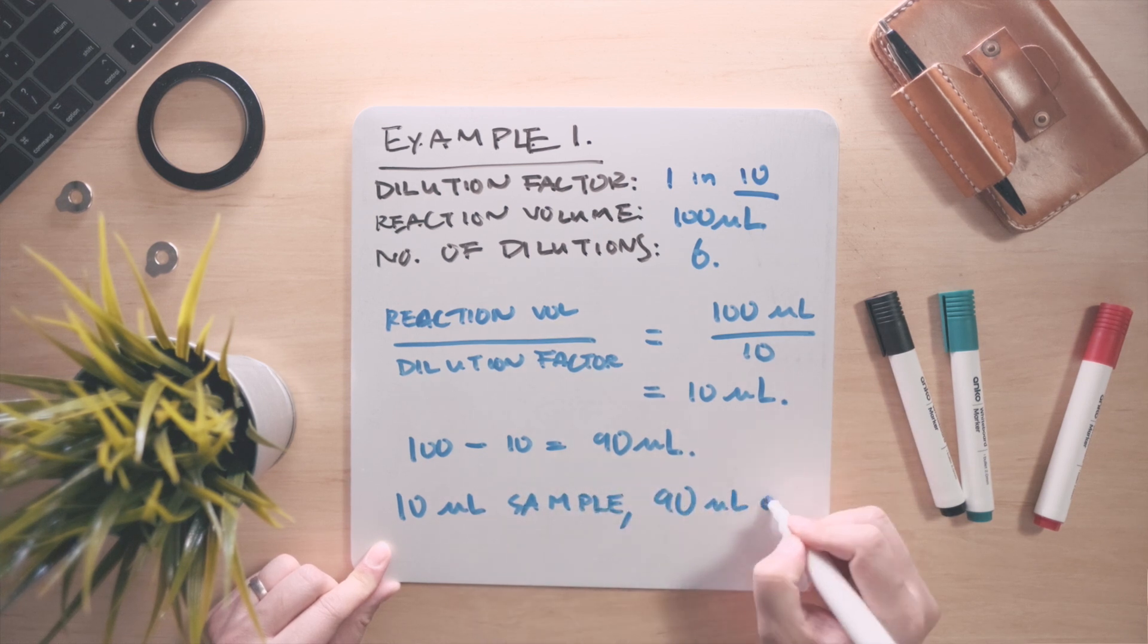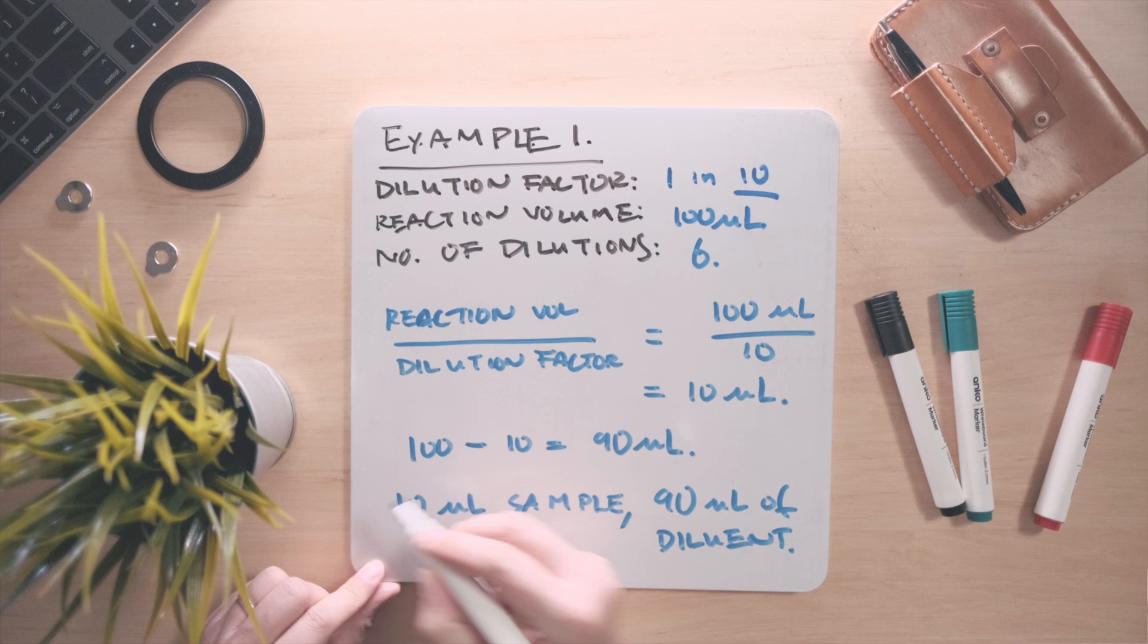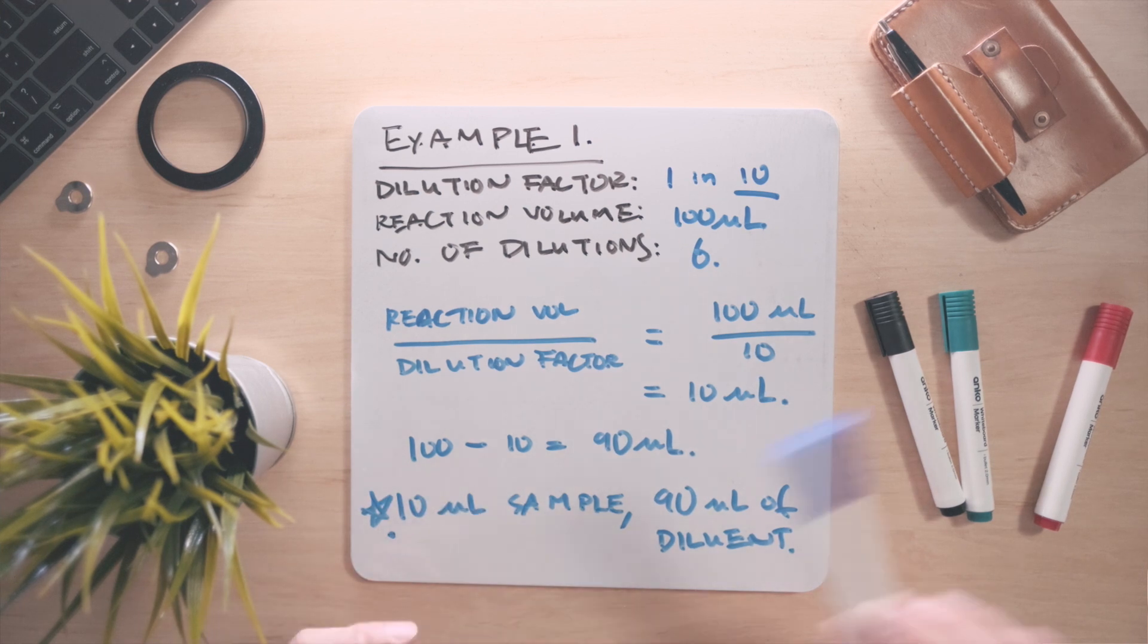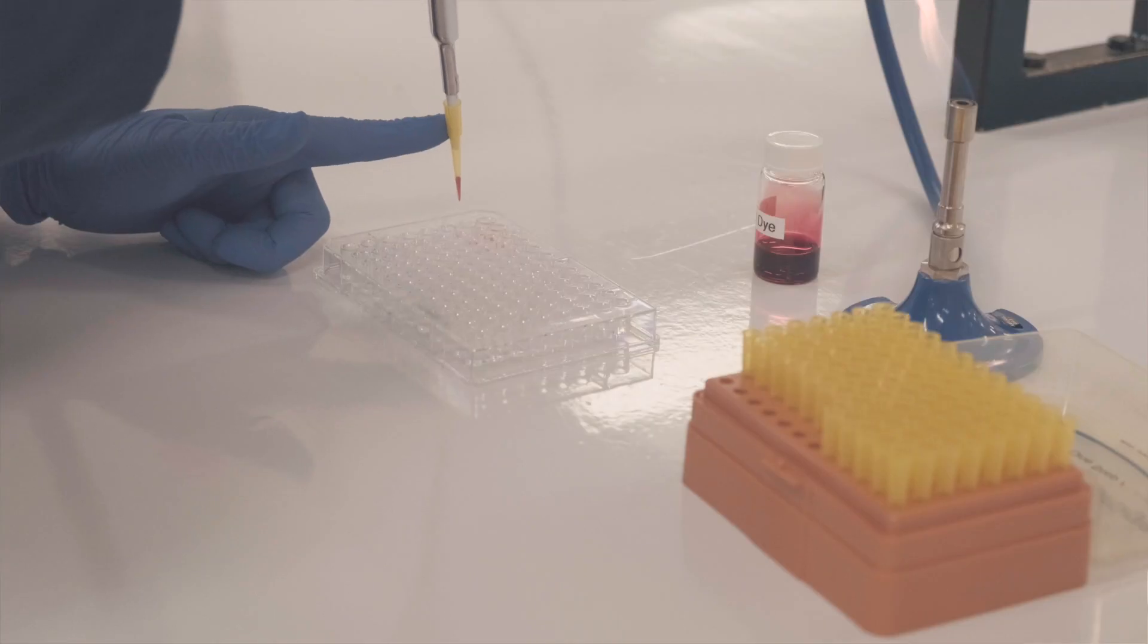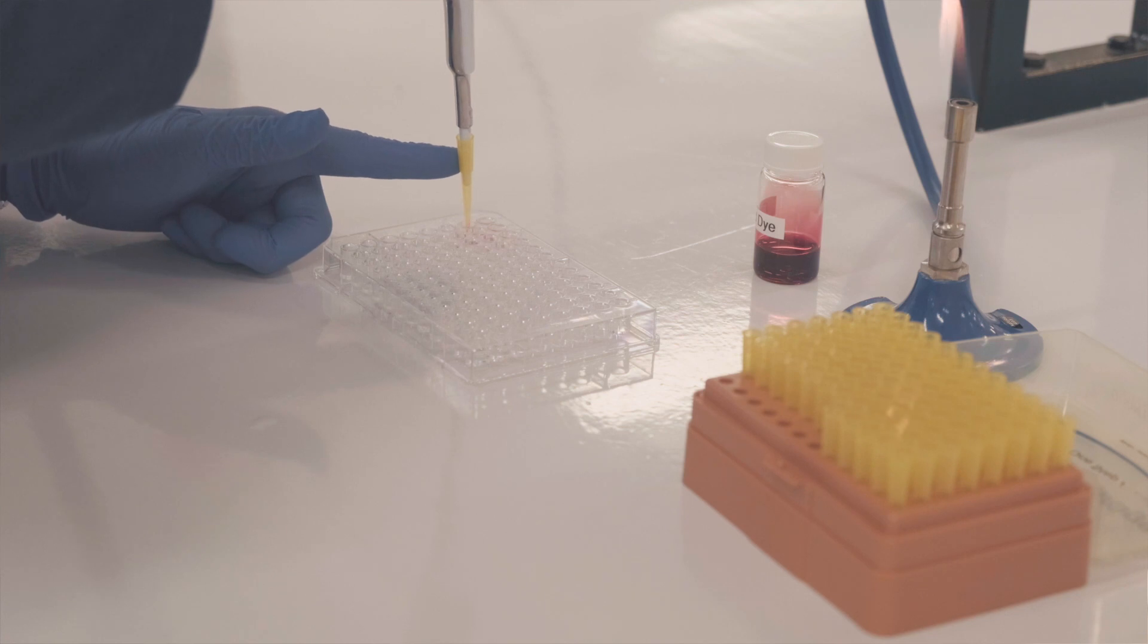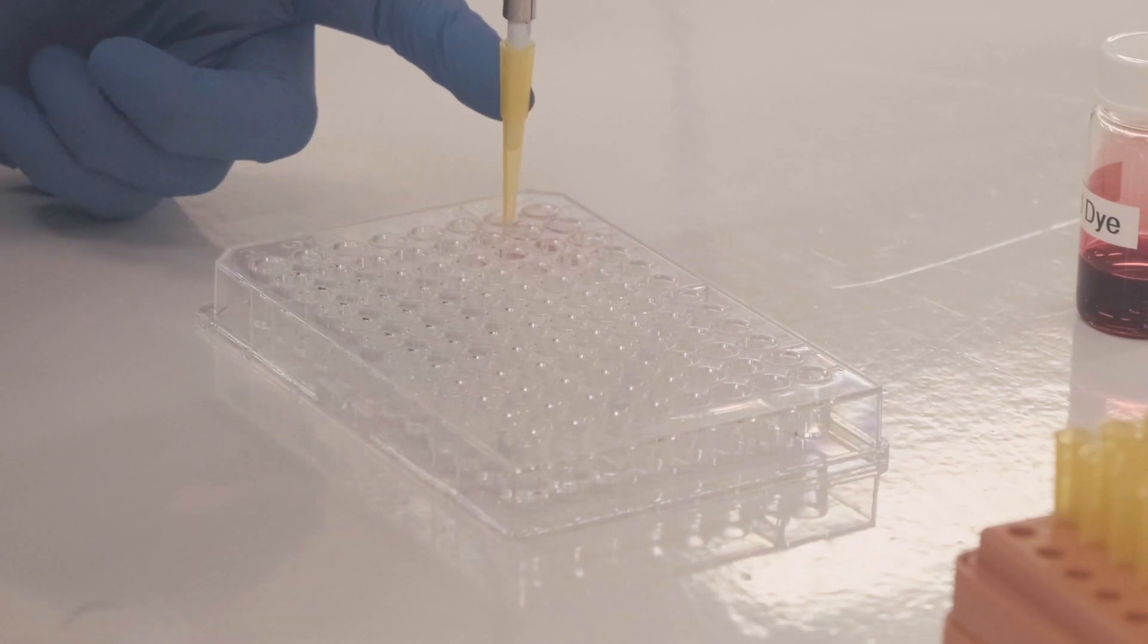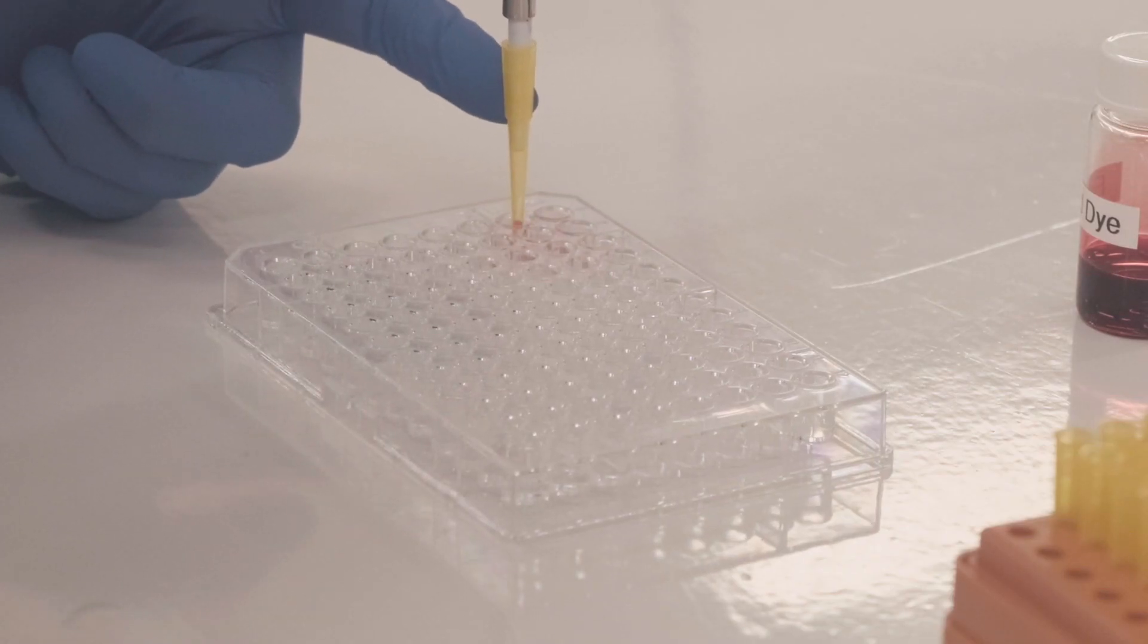Given that there are six dilutions in total, add 90 microliters of water to six wells in the plate. Then pipette 10 microliters of the food dye and add this to the first well. This is the first 1 in 10 dilution, and now this well has 100 microliters of reaction volume. The reaction needs to be thoroughly mixed, and you can do this by pipetting up and down a number of times.